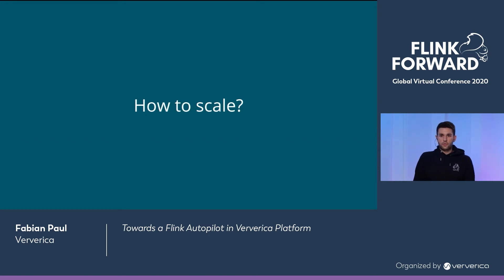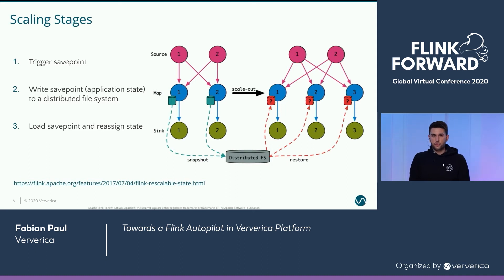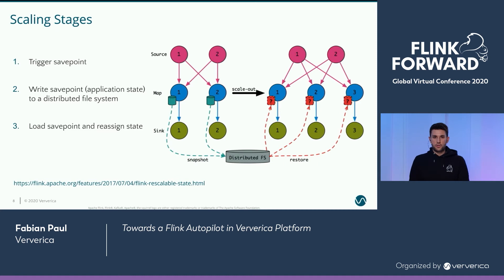How do we leverage Flink and its internal components to scale? For everyone who's familiar with Flink, this is basically how rescaling currently works. If you have a stateful application and some state, we need to stop your application, write all the state to a distributed file system, and then afterwards load it again and reassign the state to the new scaled operators.